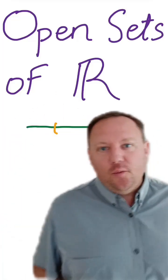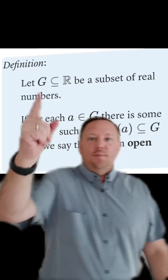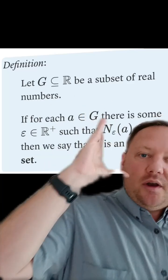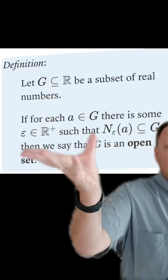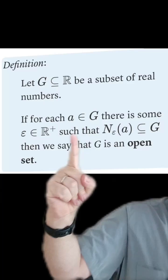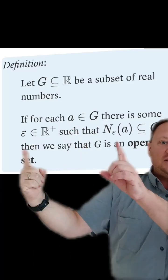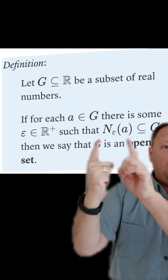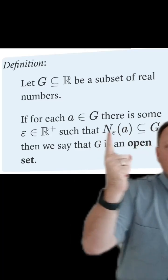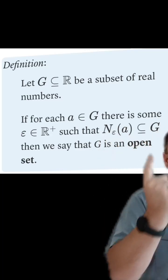Let's now officially define what is an open set of real numbers. Suppose we have a subset of the real numbers. What it means for that subset to be an open set is that for each point in the set, there exists some sufficiently small neighborhood of the point such that the neighborhood stays inside of the set G.